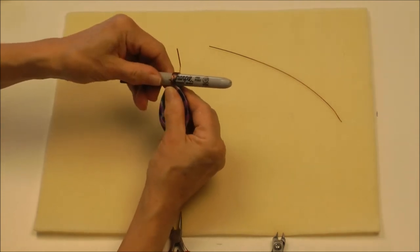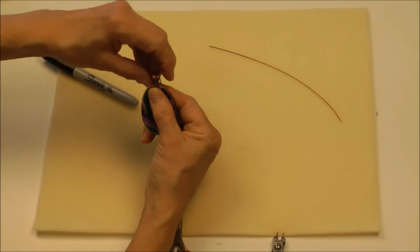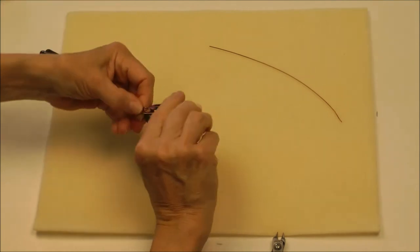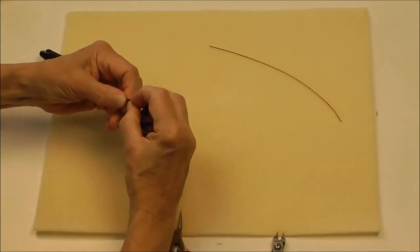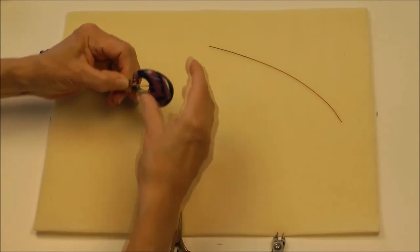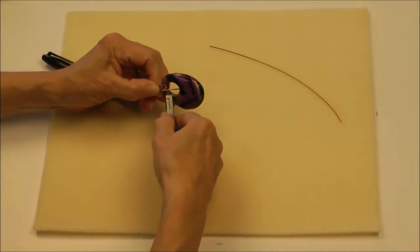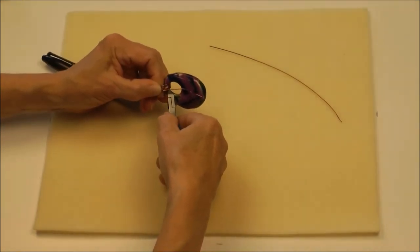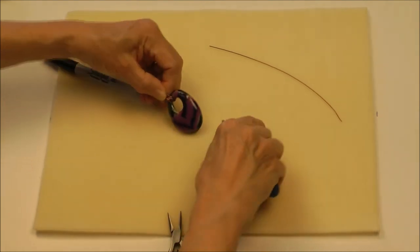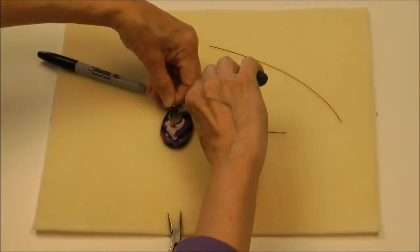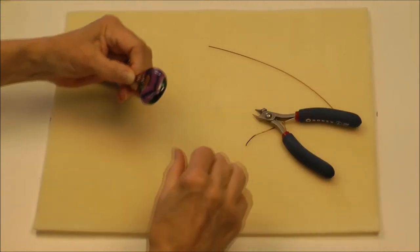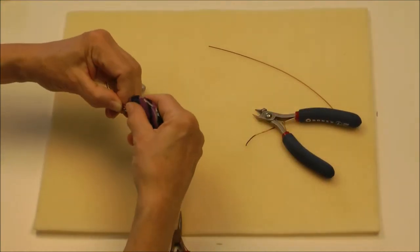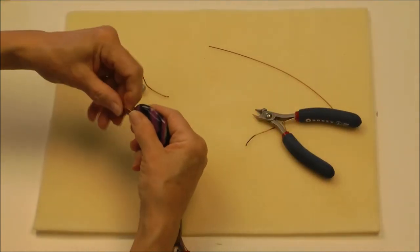I'm going to pull the pen out and trim these towards the back and the inside of the pendant hole. That looks pretty good. I just want to make sure they're not going to snag anything.